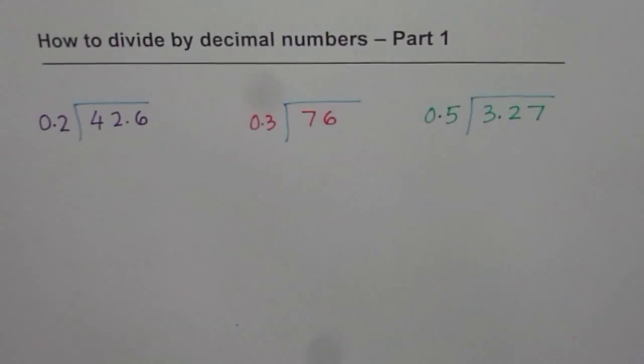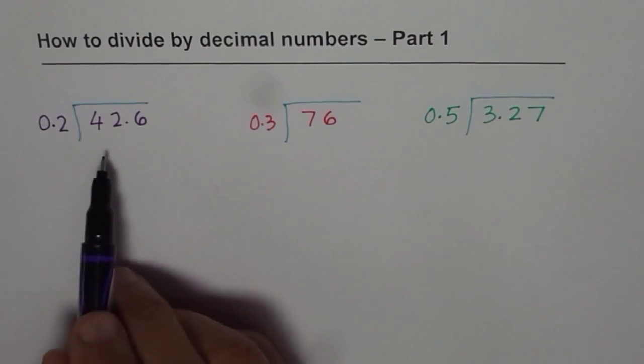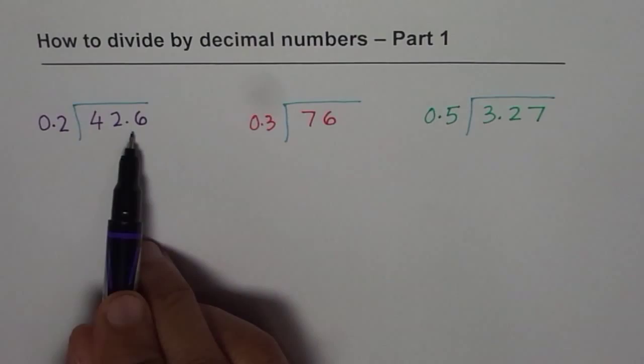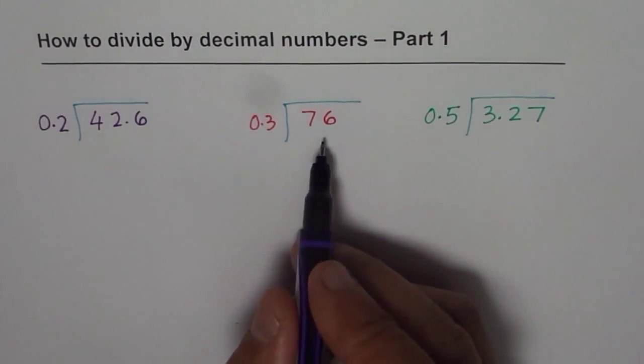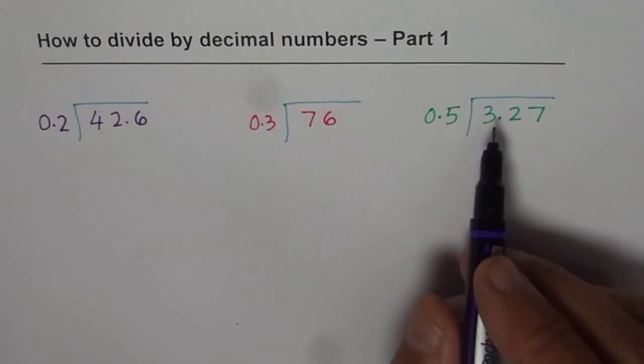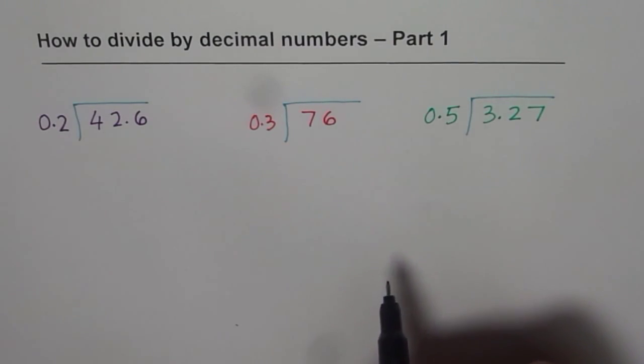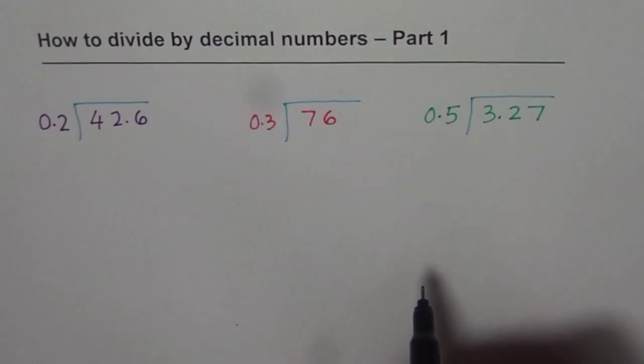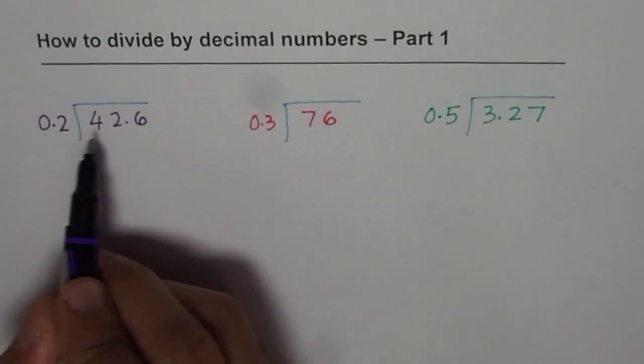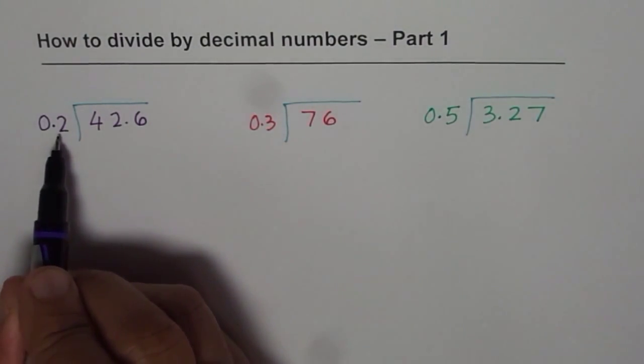In one case we have a divisor which has tenth place and it is dividing into a number which also has a tenth place. The next one we are dividing a whole number by a decimal place, and then the next one we have two decimal places to be divided by a single decimal place. Now the key here is that the divisor, the number by which you are dividing, should not have decimal. So to avoid that, what can we do?